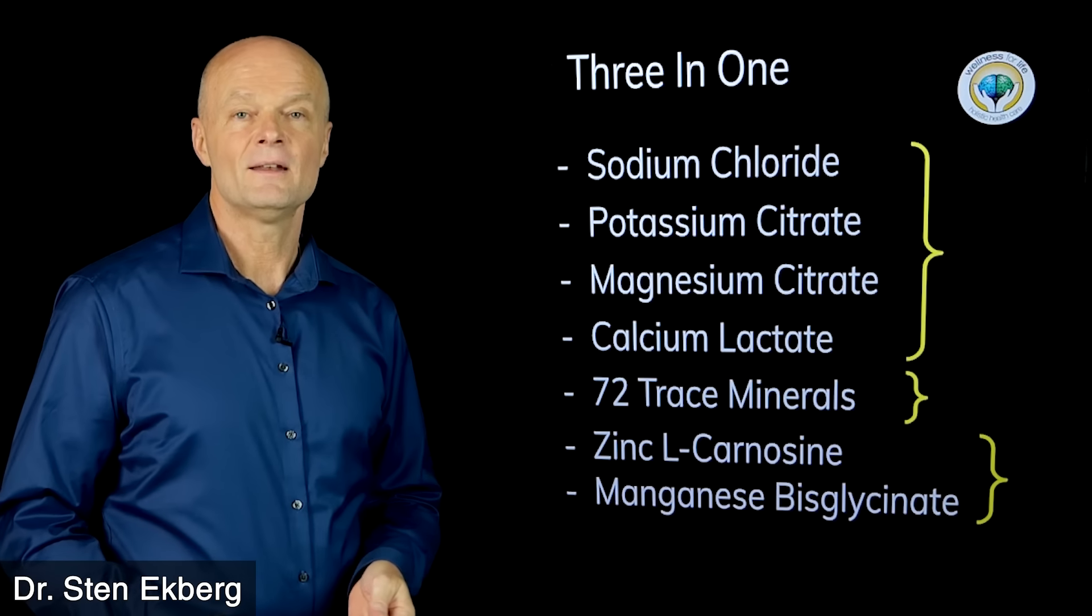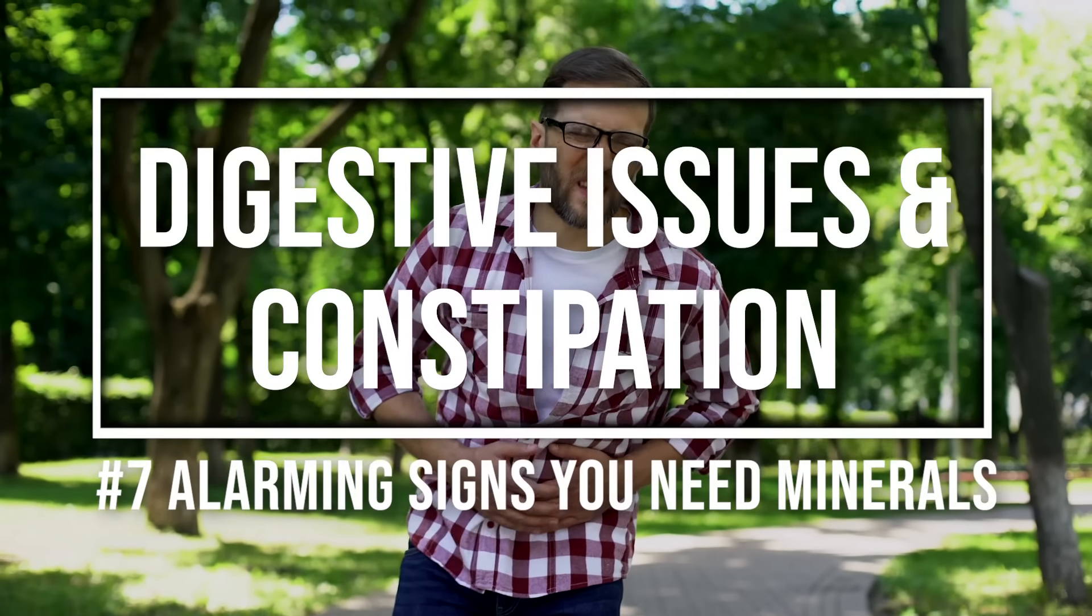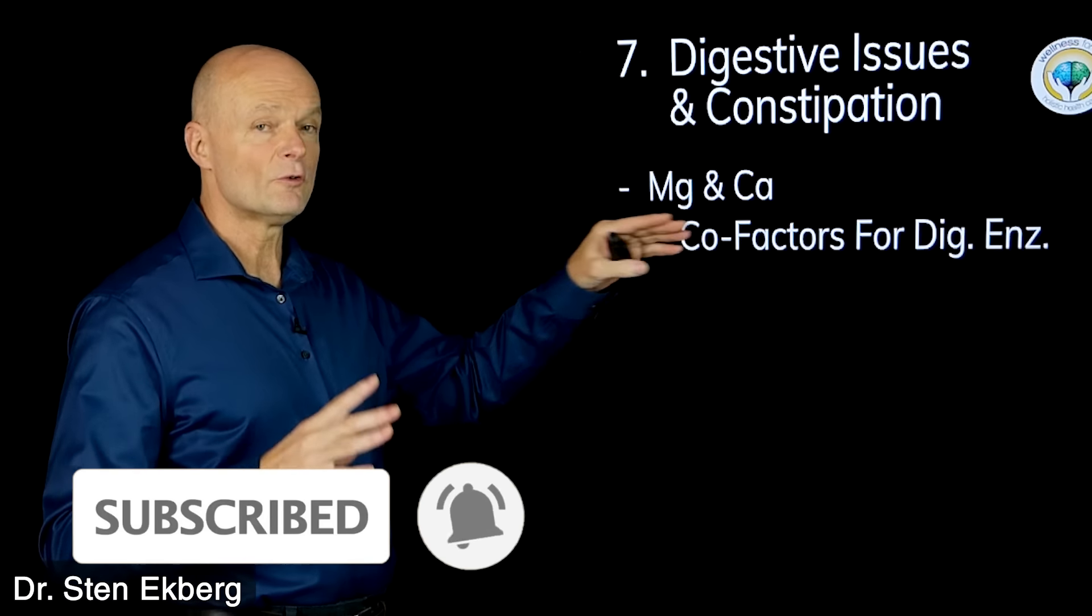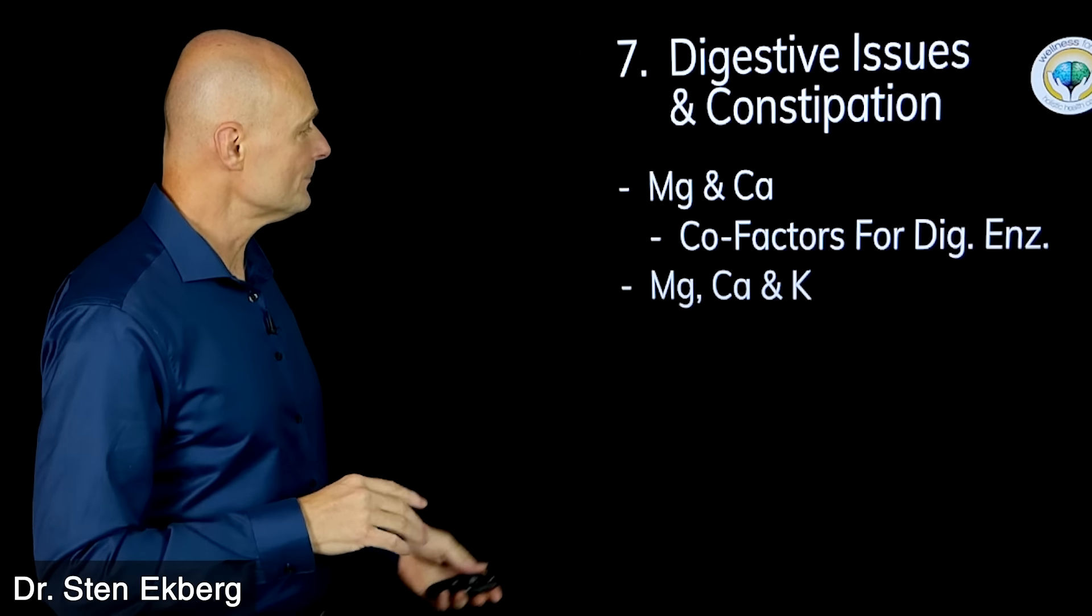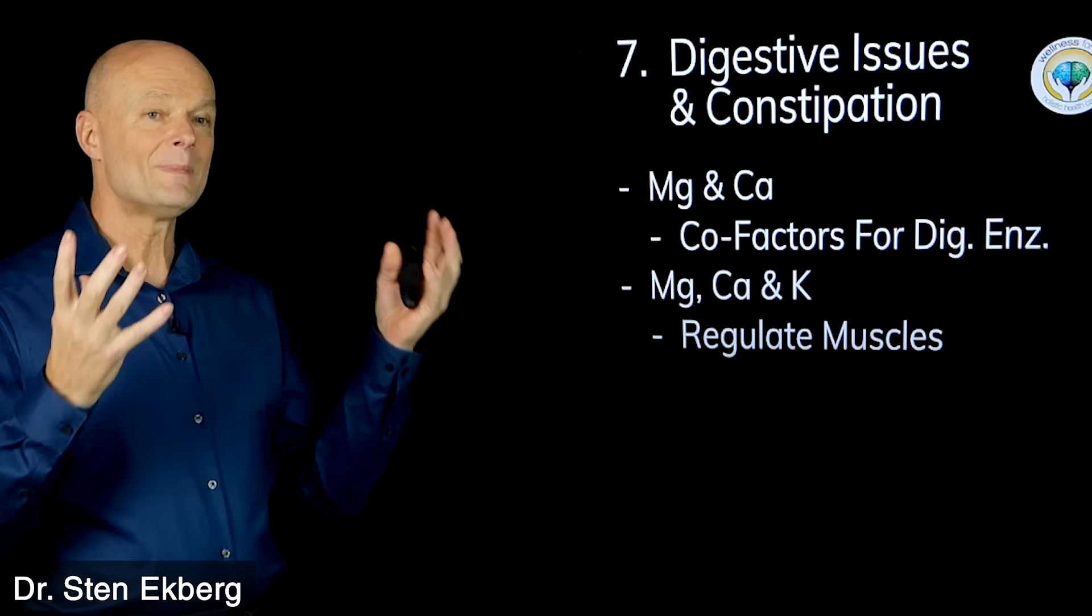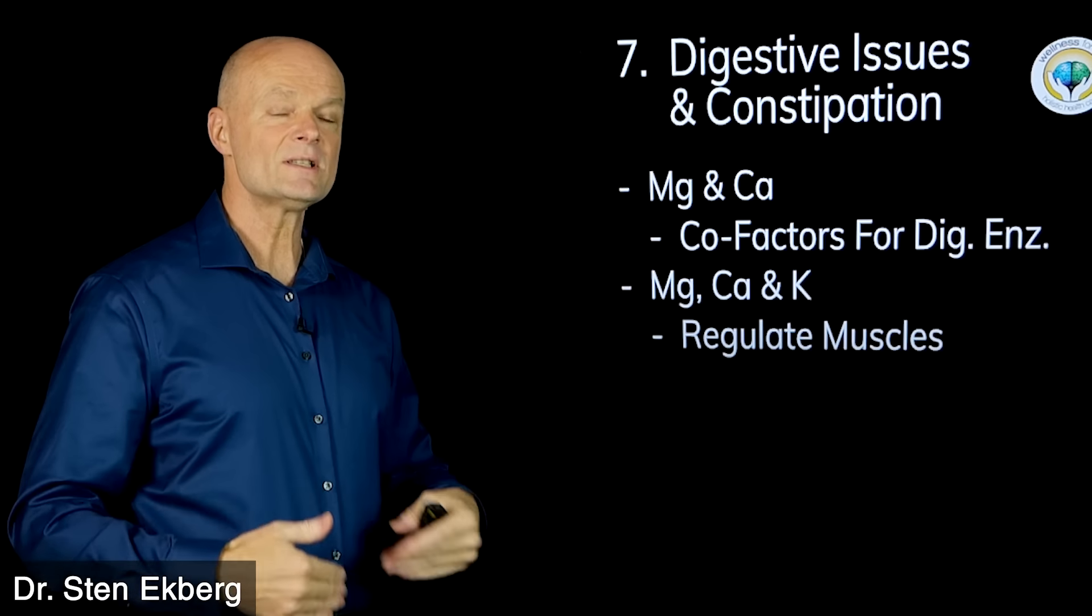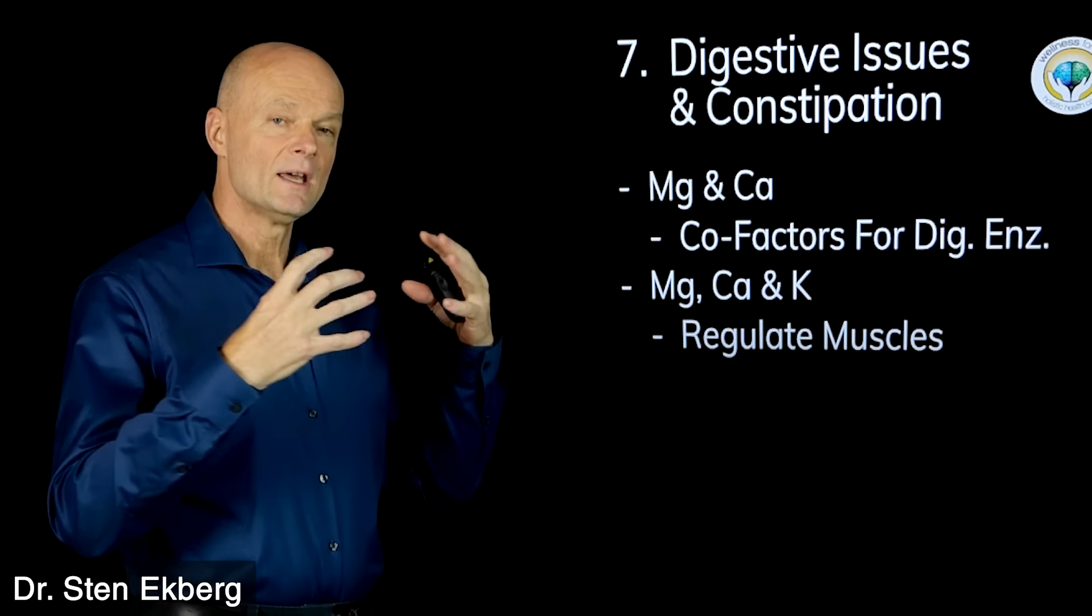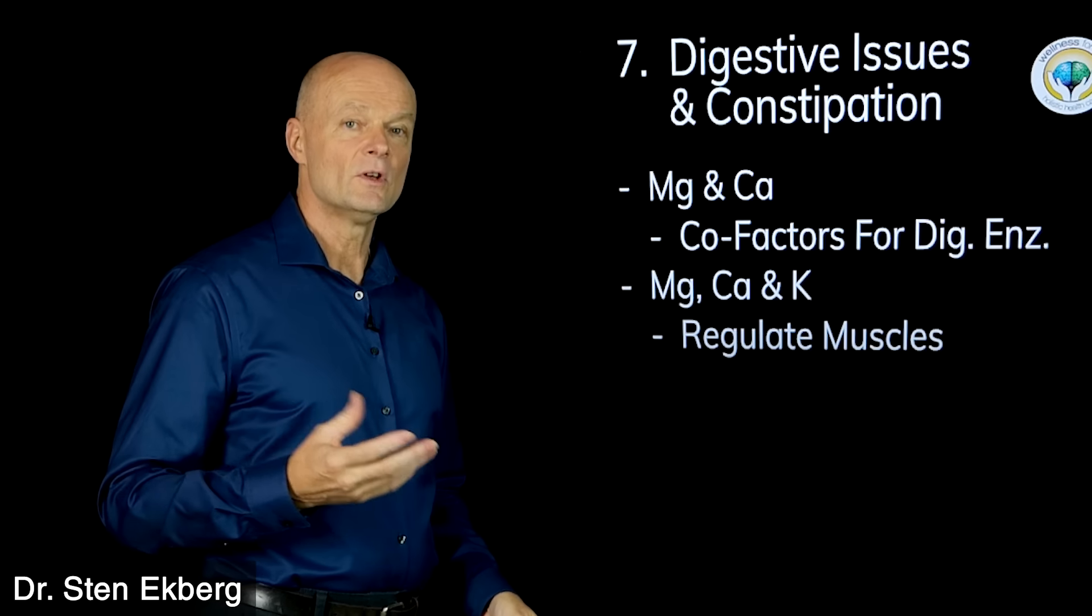Number seven is digestive issues and constipation. Here magnesium and calcium—they are cofactors for digestive enzymes, so for you to break down food. But also magnesium, calcium, and potassium are required for muscle contraction. When you move food through the digestive tract, there's something called peristalsis, which is muscle contractions that are pushing the food along, and that can't happen without those three elements.